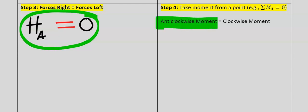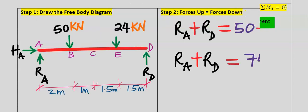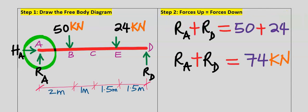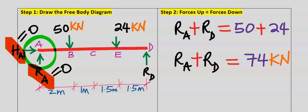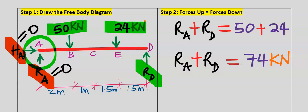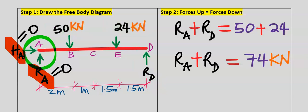To keep the beam in equilibrium, the anti-clockwise moment must equal the clockwise moment. We take moment about point A; the vertical and horizontal forces at A equal zero, so we are left with the 50 kilonewton force, the 24 kilonewton force, and the reaction force at point D. We consider each force one at a time, starting with the reaction force at point D.